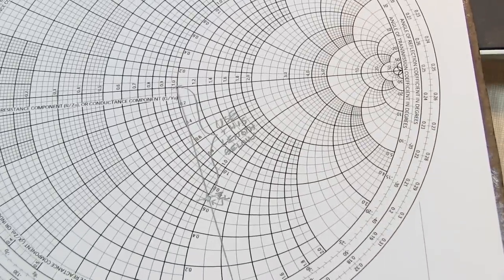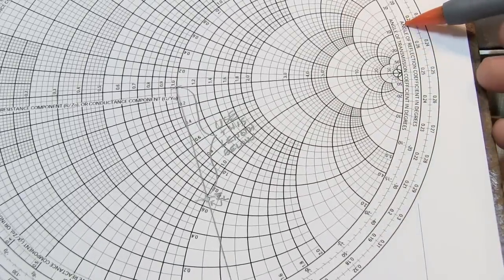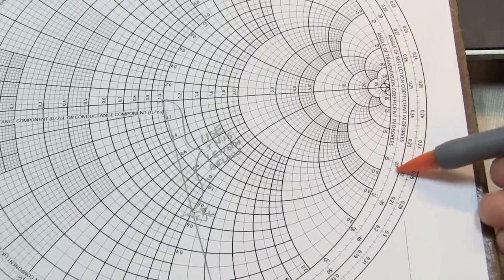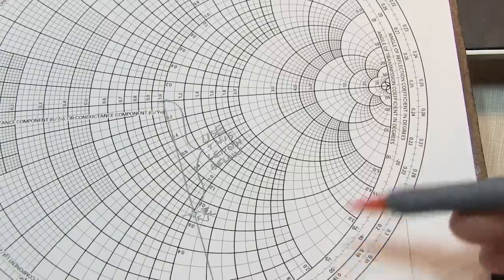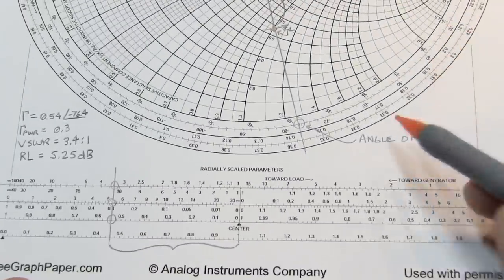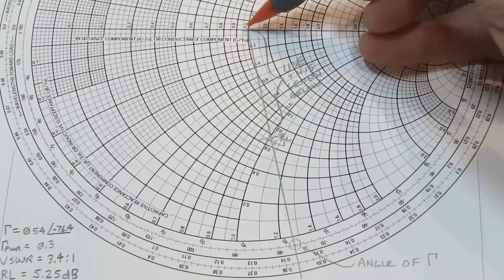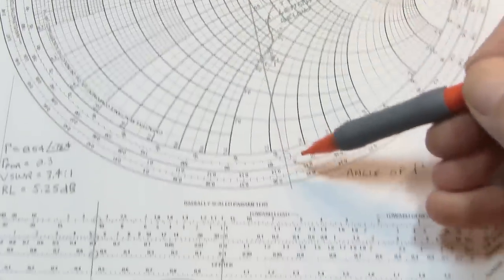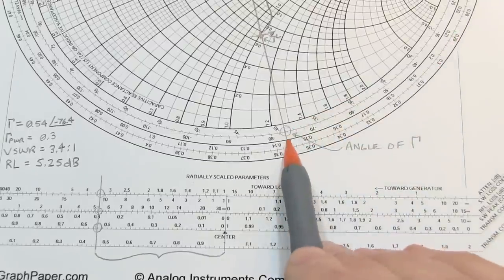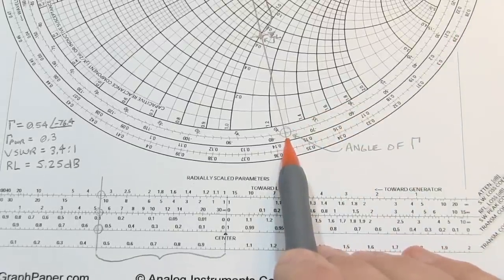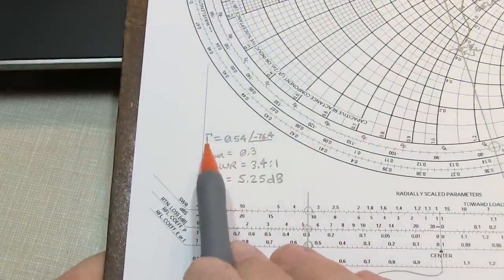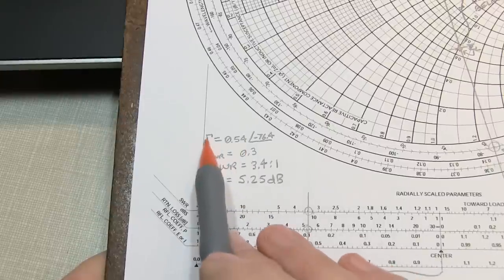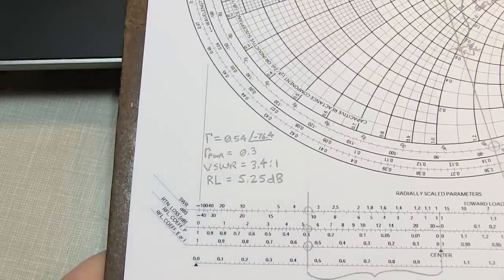So our complex reflection coefficient is 0.54 at an angle of minus 76.4 degrees, and our rho is 0.54.